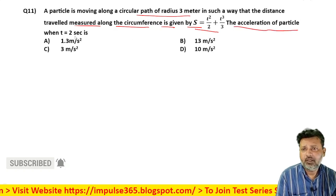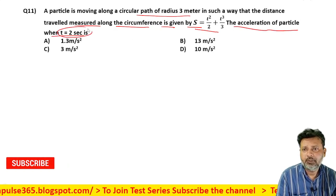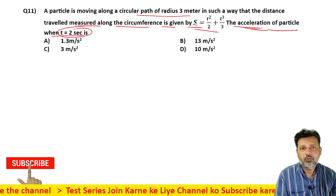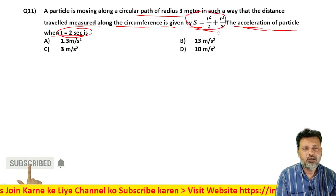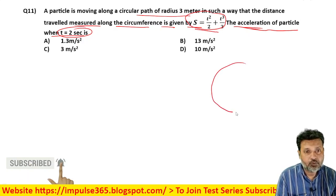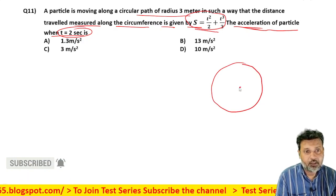The acceleration of the particle when t equals 2 seconds, what will be the acceleration? So the distance is changing according to time, it depends on time. So this means it's non-uniform circular motion. It is circular motion, but non-uniform.